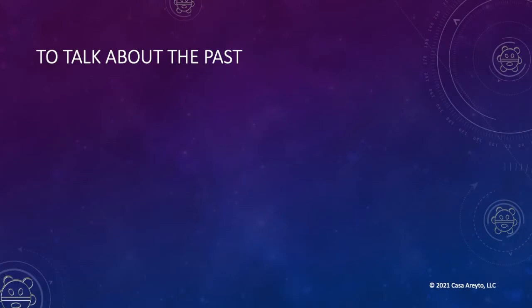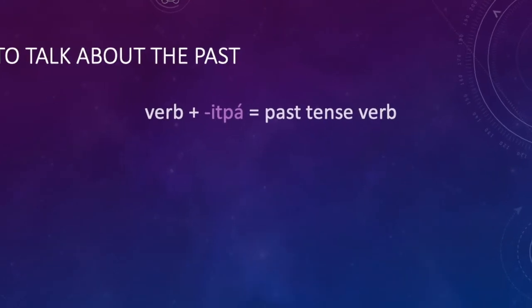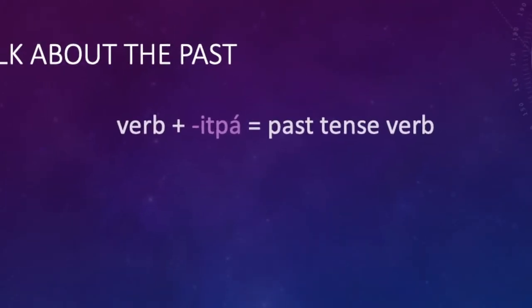So to talk about something that happened in the past, you have to follow a simple formula. You have the verb and then you add a word part, itpa, and that creates the verb in the past tense.